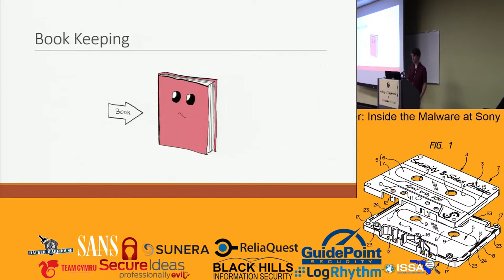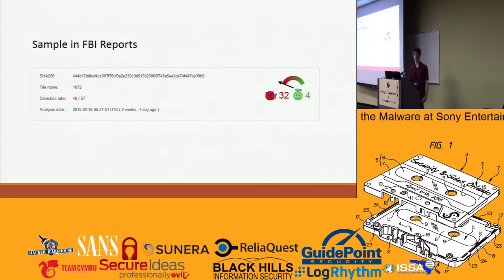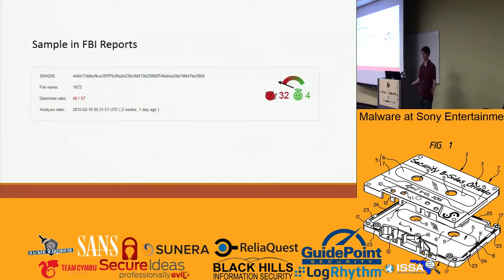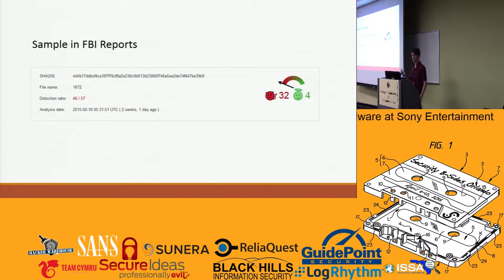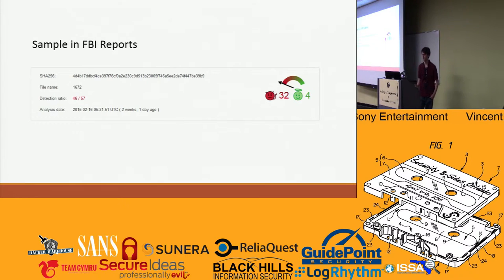Another really important thing is to run it against some existing antivirus — see if this is an already known malware sample or something completely new dropped on a honeypot or something. So the malware analysis that you'll find in the reports by the FBI and stuff, it has this hash here.